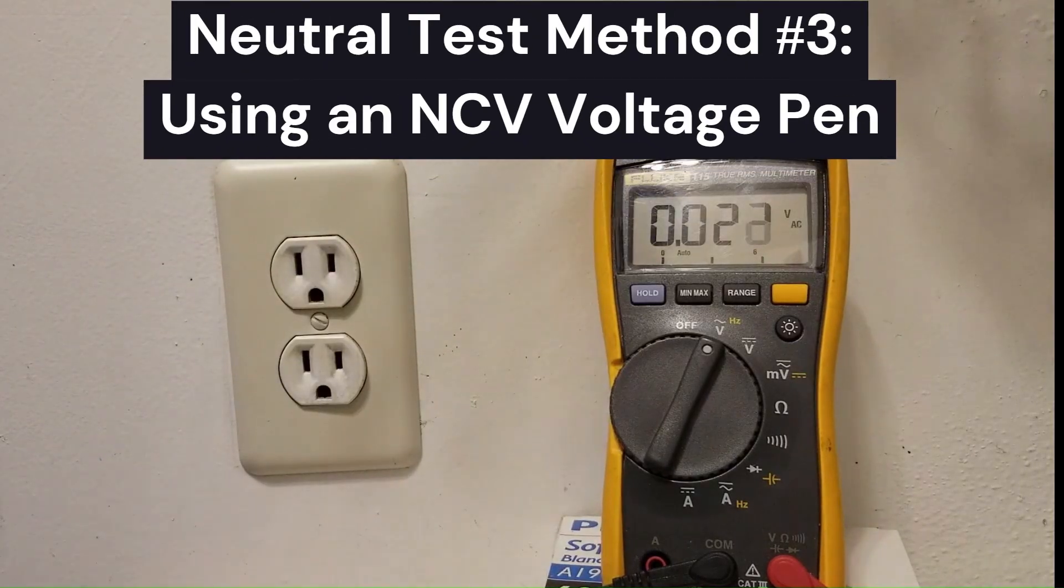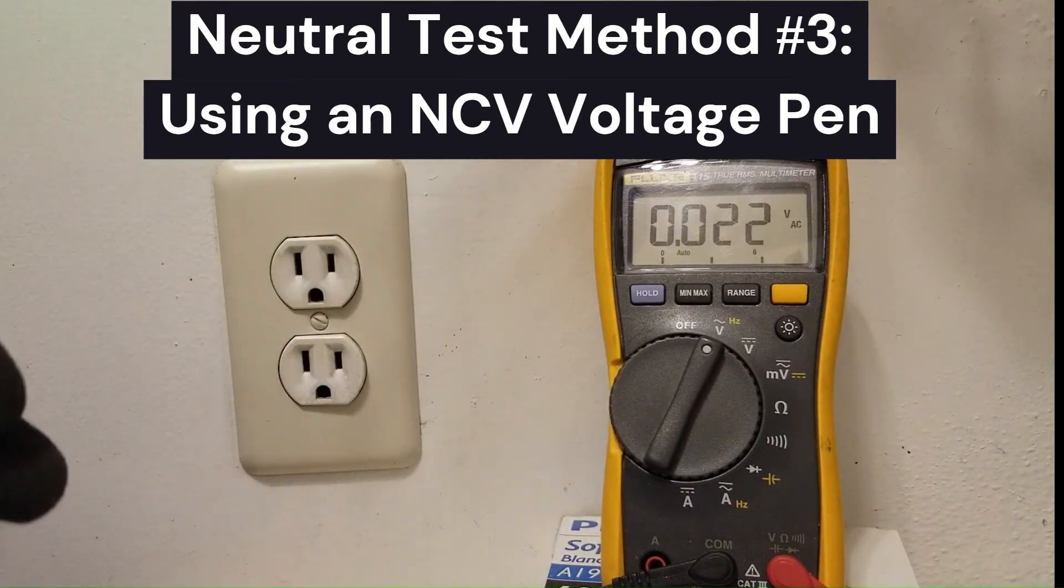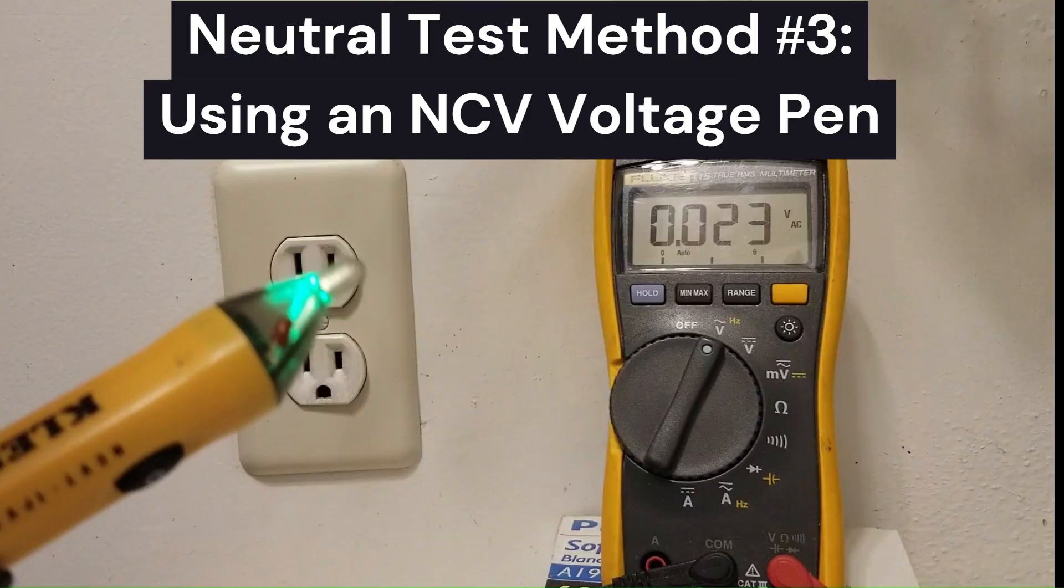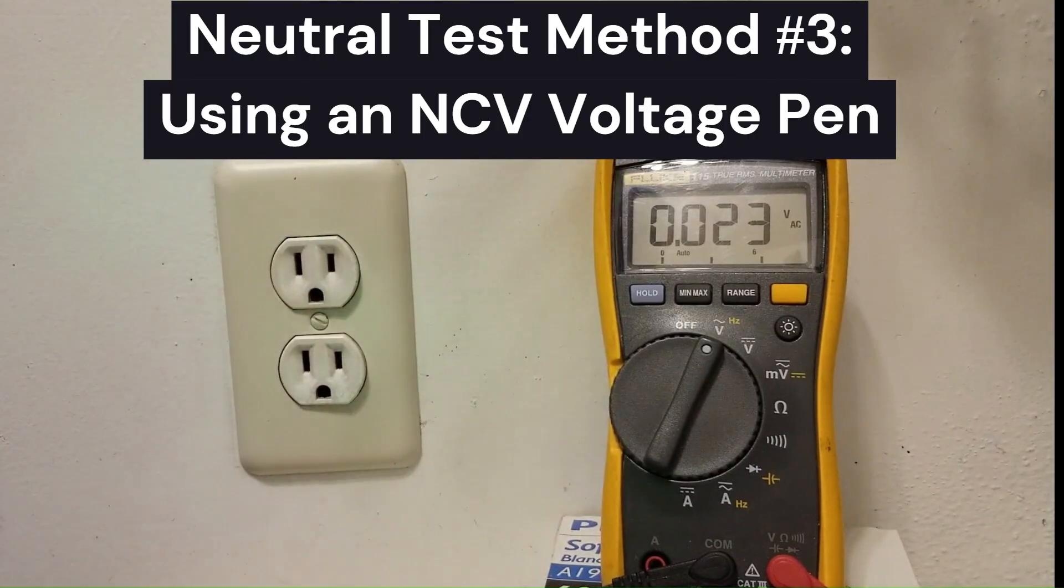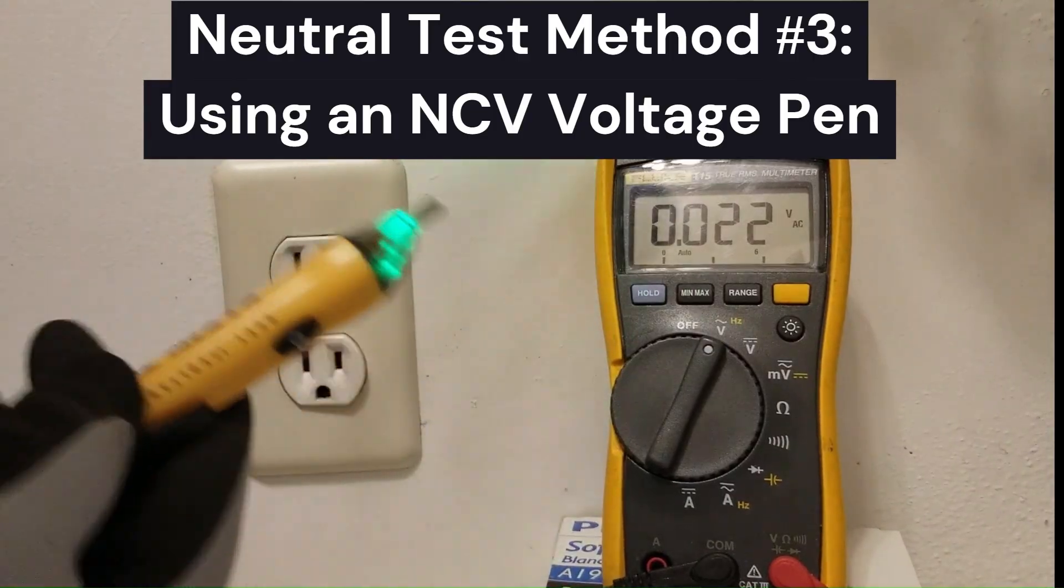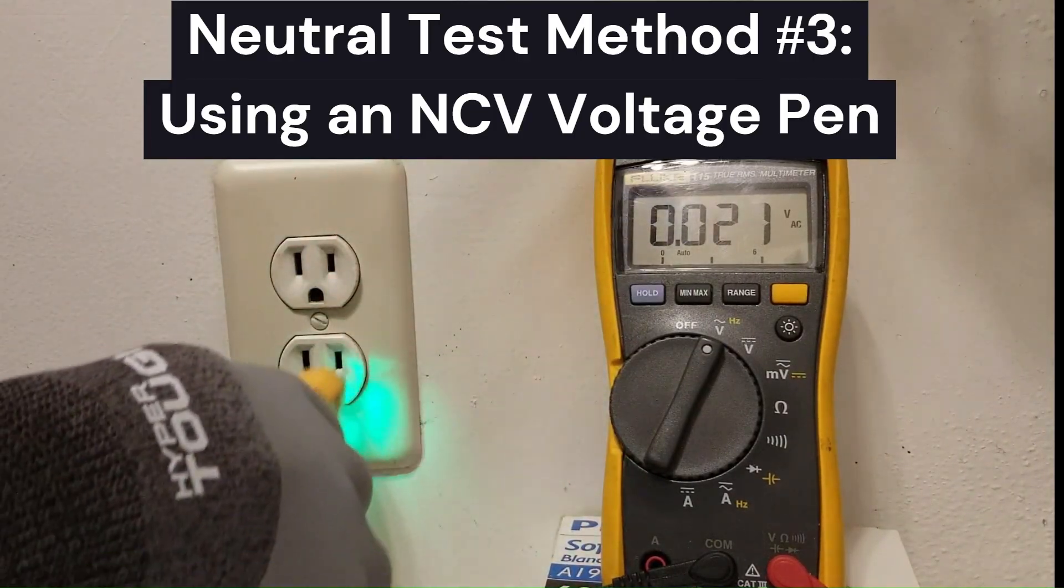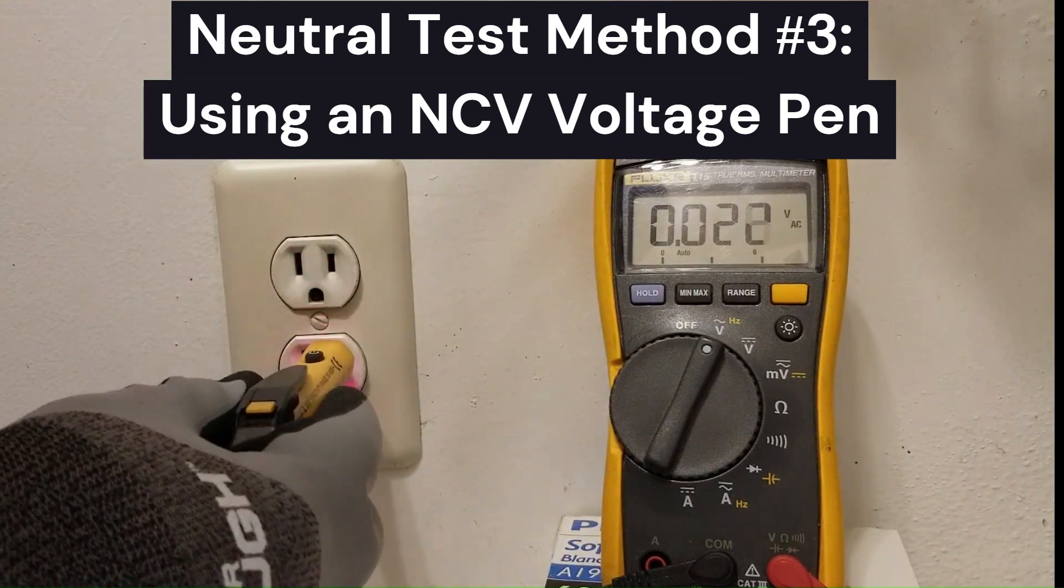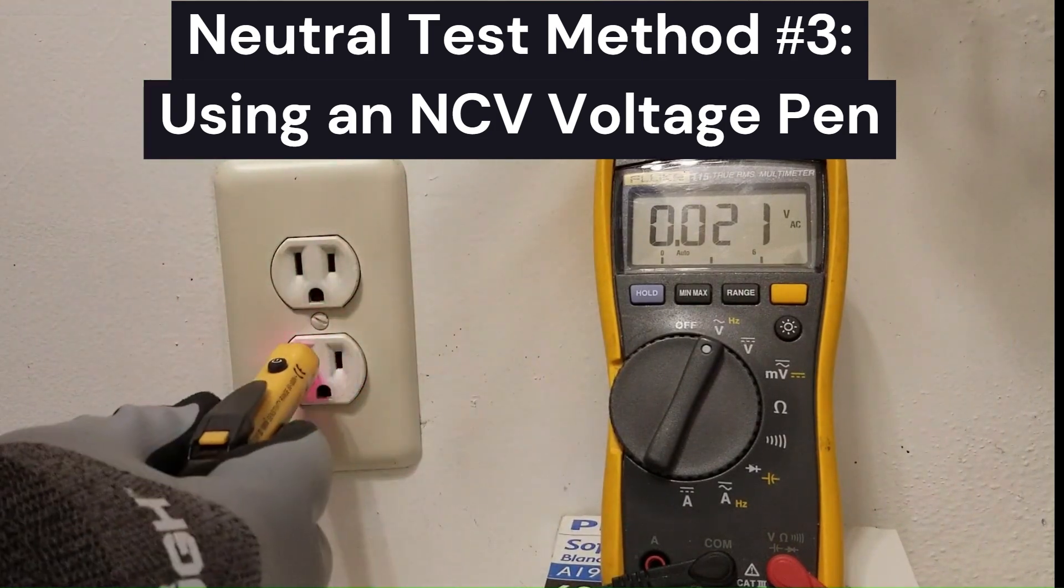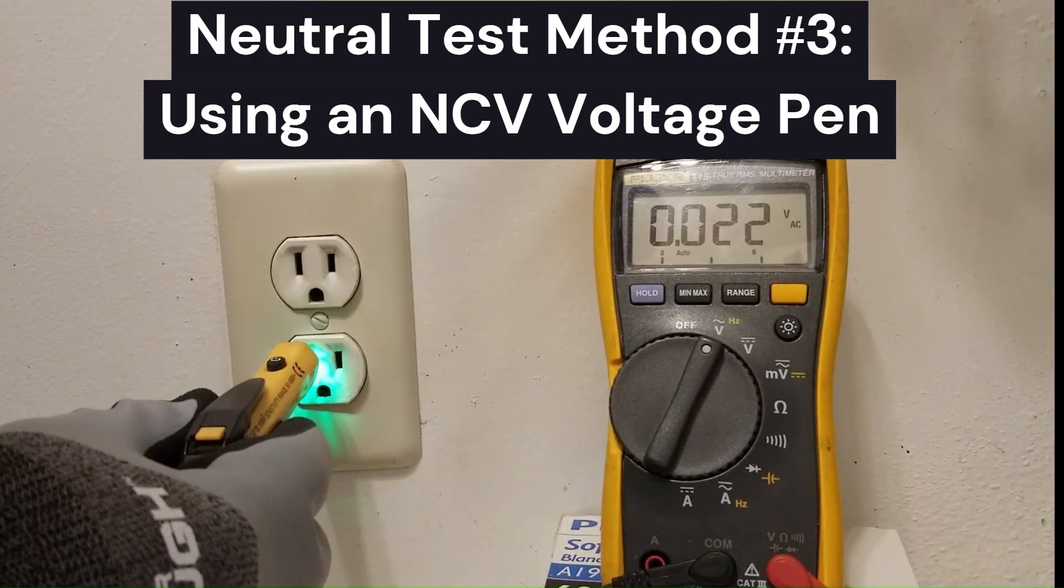So how can you tell if you only have a voltage pen? A voltage pen is a very handy way. If you know how to use it and you know how to interpret it, it can give you a lot of information. A lot more than most people think. So normally a voltage pen is going to give us on a good outlet a reading on the hot like this, which it should. And no reading on the neutral because neutral should be zero volts, right?